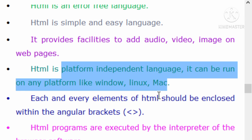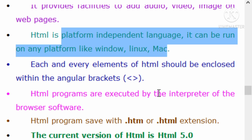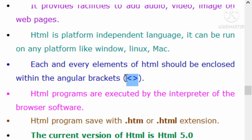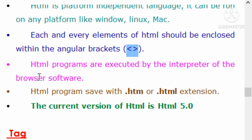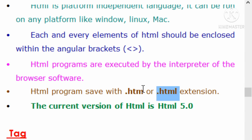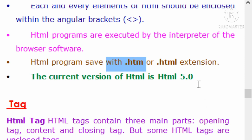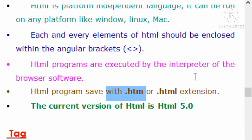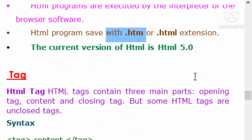In every operating system, we can execute the HTML file. In HTML files, we can implement tags and calls. In our HTML document, we can execute the browser software. Currently in the market, we are using HTML 5th version. This supports all of the features that the market needs when designing websites.